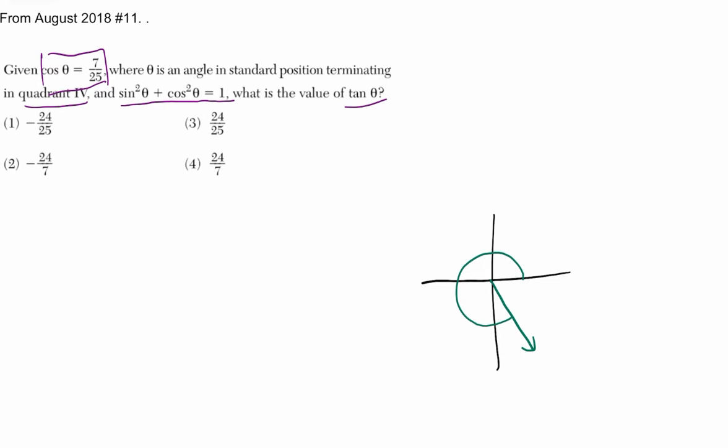And I'm thinking, all right, from here we can draw this triangle. And they tell us that the cosine of the angle, so we can use the reference angle, is 7 over 25. So cosine is adjacent over hypotenuse, so this length is 7, and the hypotenuse is 25. We just want to find this y value here.